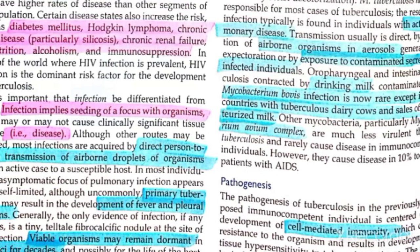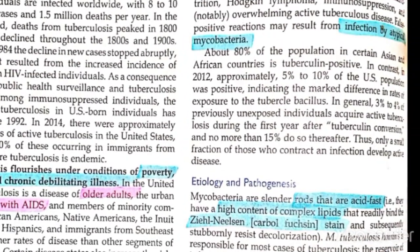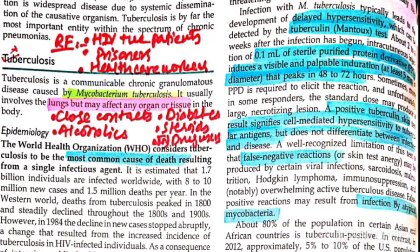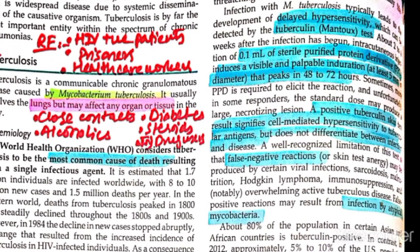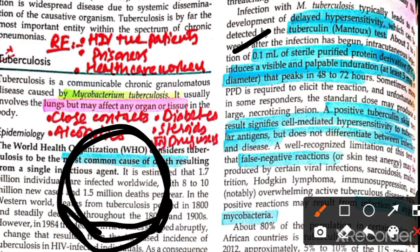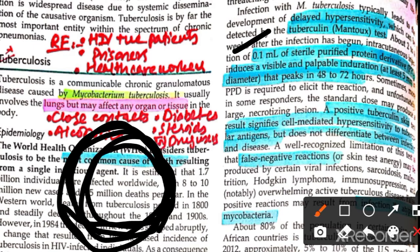We will learn about primary and secondary TB. The Mantoux test, also called the tuberculin skin test, involves giving the patient 0.1 ml of purified protein derivative. The skin reaction is then measured between 42 to 72 hours later, and we measure the diameter of induration.